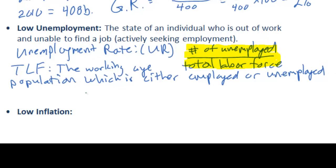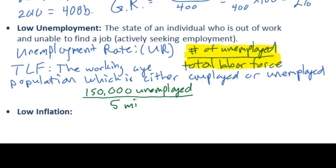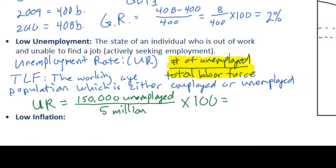Let's do a simple calculation for Switzerland. Let's assume that in 2010, Switzerland had 150,000 unemployed people, and that the total labor force of Switzerland is approximately 5 million people. To find the unemployment rate, all we must do is find the proportion of the total labor force that is unemployed and multiply it by 100. 150,000 unemployed people out of a total labor force of 5 million gives Switzerland an unemployment rate of 3%, meaning only 3 of every 100 members of the Swiss labor force are actively seeking and unable to find work.